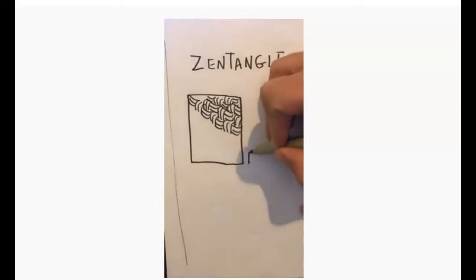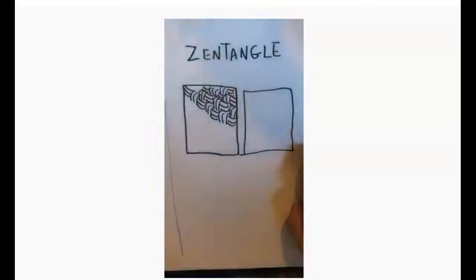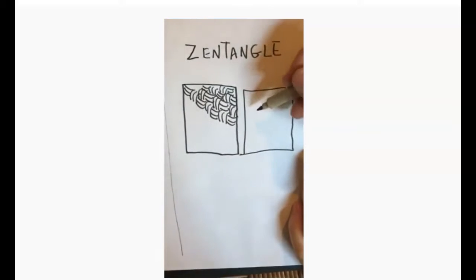And so the other way to do it is in one of your other squares, to come up with your own pattern, which I think is a little bit more of the advanced way. And this is where you can get lost in what you're creating.